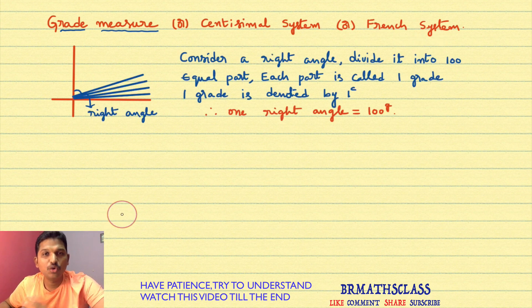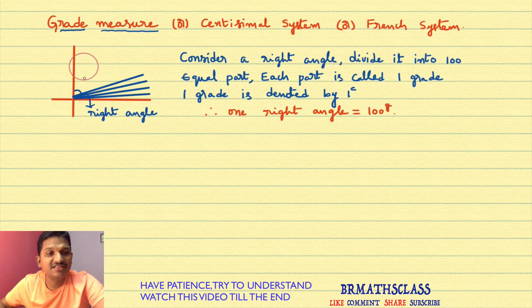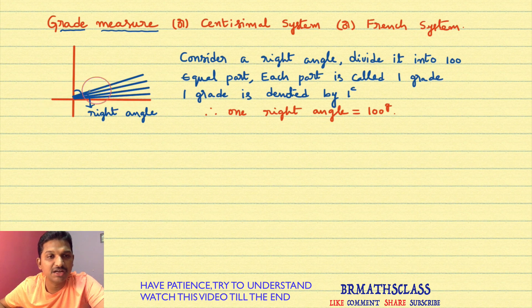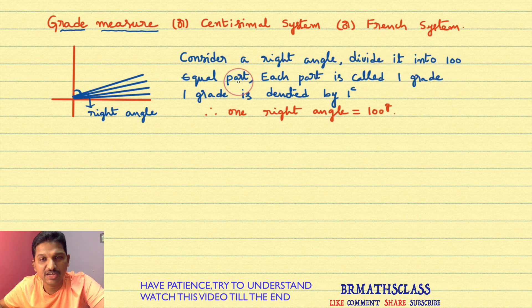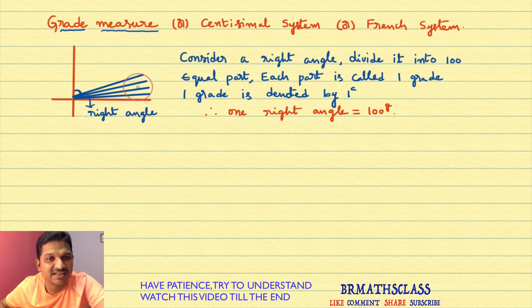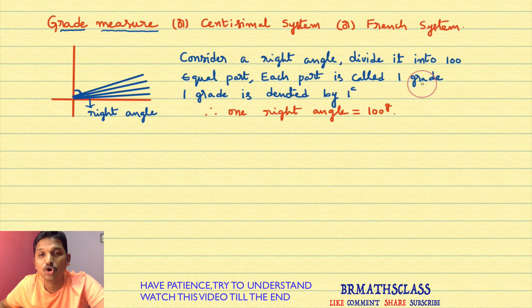We will try to understand what is one grade. First, consider a right angle. If two lines are perpendicular, then the angle between them is known as one right angle. Now divide this right angle into 100 equal parts. Each part is called one grade.